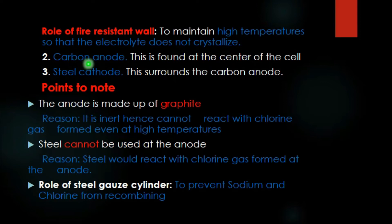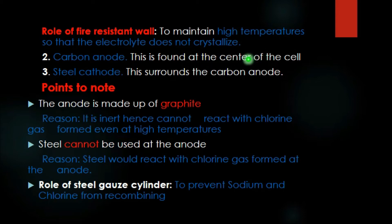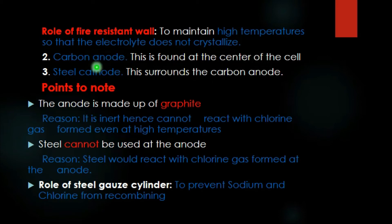The Down cell also has a carbon anode. Since we are talking about electrolysis, we must have an anode and a cathode. The anode is made of carbon, specifically graphite, and is found at the center of the cell. The steel cathode surrounds the carbon anode. Steel is an alloy whose main metal is iron.